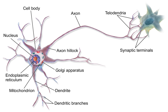Receptors respond in different ways to stimuli. Slowly adapting or tonic receptors respond to steady stimulus and produce a steady rate of firing. Tonic receptors most often respond to increased intensity of stimulus by increasing their firing frequency, usually as a power function of stimulus plotted against impulses per second. Other receptor types include quickly adapting or phasic receptors, where firing decreases or stops with steady stimulus. Examples include skin, which when touched causes neurons to fire, but if the object maintains even pressure, the neurons stop firing. The neurons of the skin and muscles that are responsive to pressure and vibration have filtering accessory structures that aid their function. The Pacinian corpuscle is one such structure.